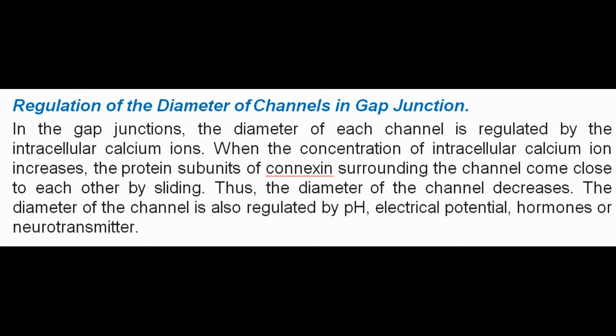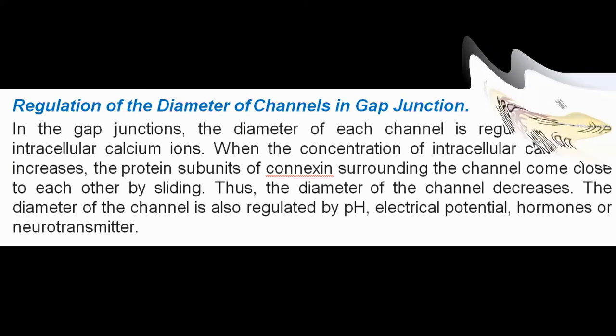Regulation of the diameter of channels in gap junction: In gap junctions, the diameter of each channel is regulated by intracellular calcium ions. When the concentration of intracellular calcium ions increases, the protein subunits of connexin surrounding the channel come close to each other by sliding, and thus the diameter of the channel decreases. The diameter of the channel is also regulated by pH, electrical potential, hormones, or neurotransmitters.